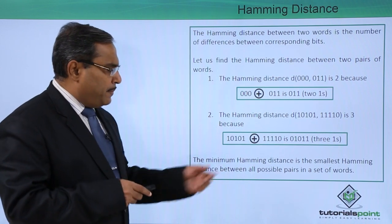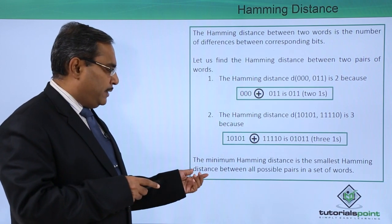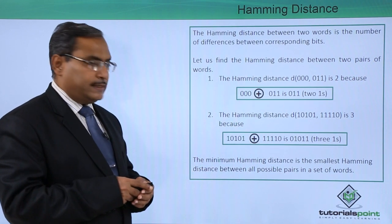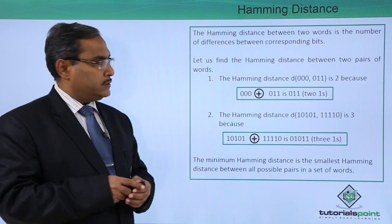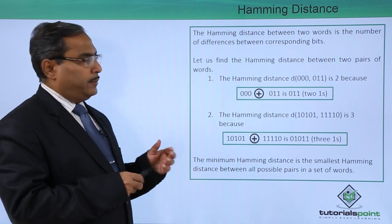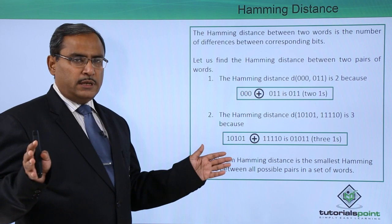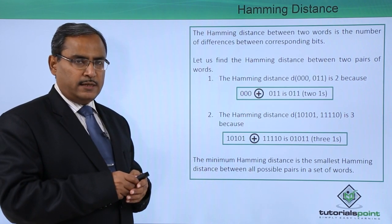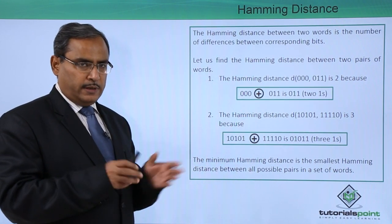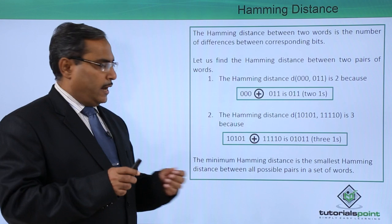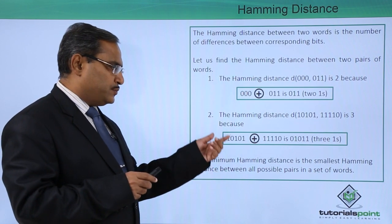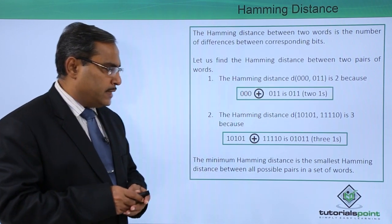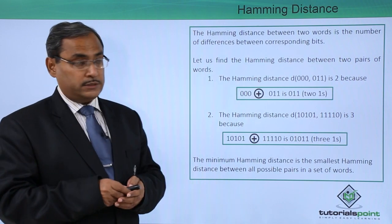The minimum Hamming distance is the smallest Hamming distance between all possible pairs in a set of words. Whenever we have a set of words, we go on calculating the Hamming distances between each pair and take the smallest Hamming distance between all possible pairs in that set.